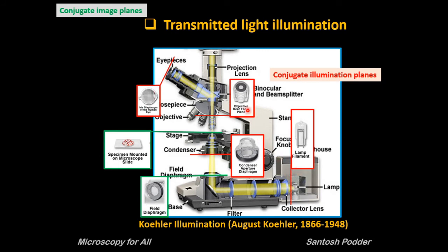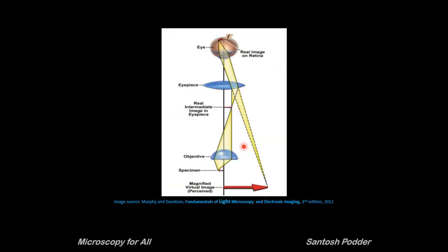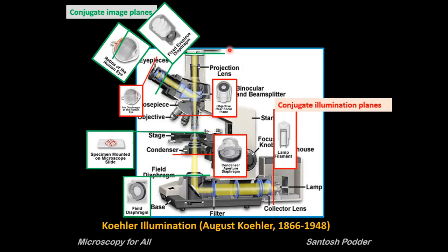After the light passes through the specimen it goes through the objective lens and forms a real intermediate image near to or at the eyepiece diaphragm. The eyepiece enlarges this small real intermediate image — it functions mainly as a magnifying glass for the intermediate image. Finally, the brain creates a virtual image with the help of photoreceptors in the retina and the optic nerves, and this we perceive as an image. If you want to capture the image, instead of going to the eyepiece, the light should go directly to the camera port where the intermediate image will be captured by the camera. In camera the image is magnified by the objective only — remember this point.